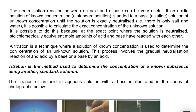What is really happening here? The neutralization reaction between an acid and a base can be very useful. If an acidic solution of known concentration is added to a basic solution of unknown concentration until the solution is exactly neutralized, it is possible to calculate the exact concentration of the unknown solution. Titration is a technique where a solution of known concentration is used to determine the concentration of an unknown solution.